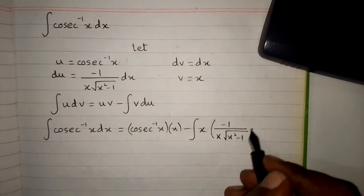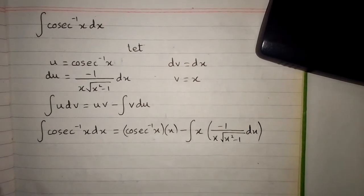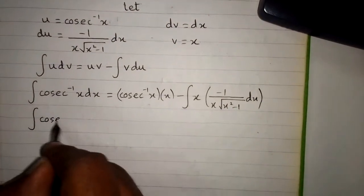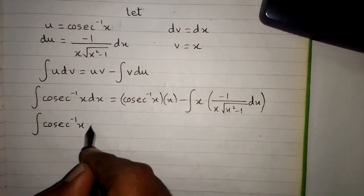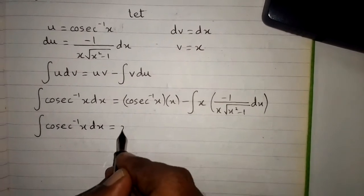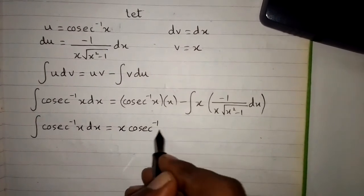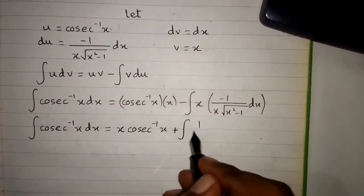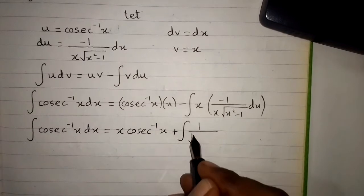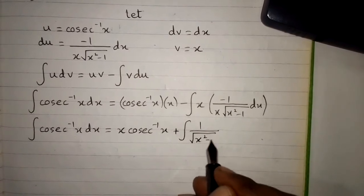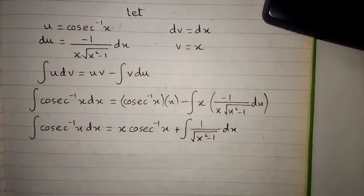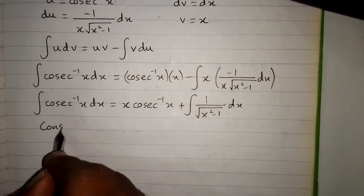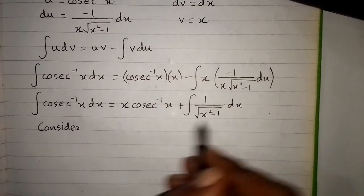After simplifying, the integral of arcsecant inverse x dx equals x times arcsecant inverse x plus the integral of 1 upon square root of x squared minus 1, dx. Now we consider this remaining integral.